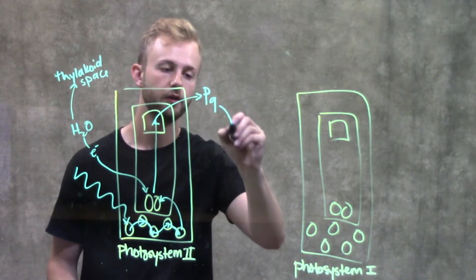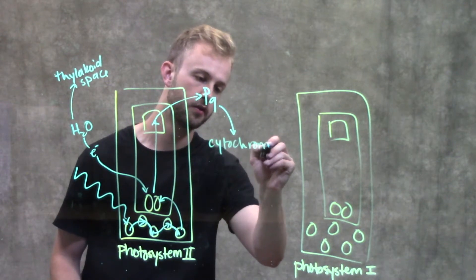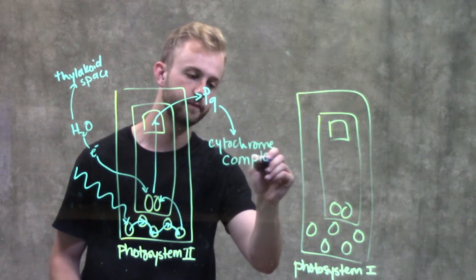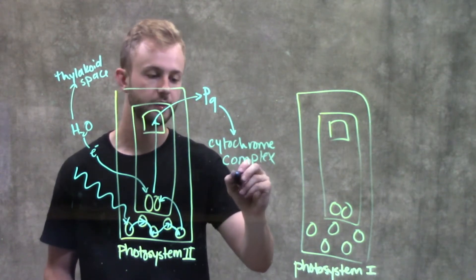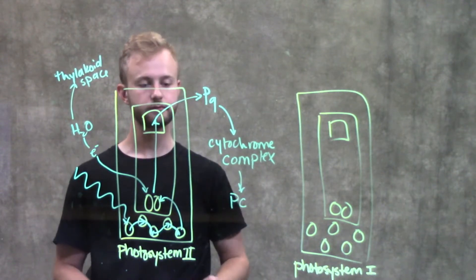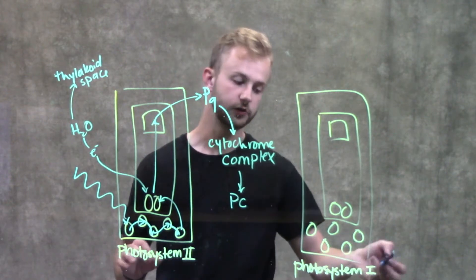From plastoquinone, we go to the cytochrome complex, and then to plastocyanin. We'll stop there for a second and go over to photosystem I.